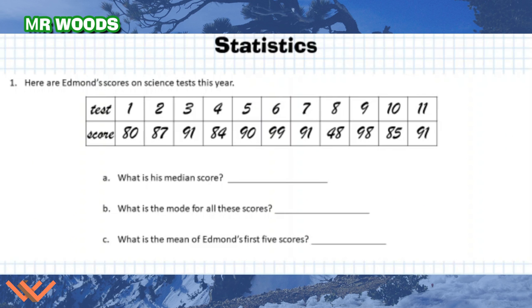For number one, here are Edmund's scores on science tests this year. As we can see in this table, he's taken 11 tests and he has a variety of scores. For A, what is his median score? B, what is the mode for all these scores? C, what is the mean of Edmund's first five scores?